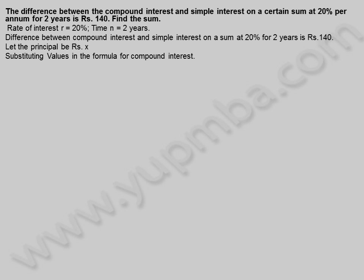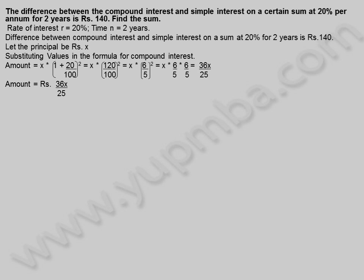Substituting values in the formula for compound interest. Amount is equal to X into (1 + 20/100) whole square, equals X into (120/100) whole square, equals X into (6/5) whole square, equals X into 6/5 into 6/5, which equals 36X by 25. Amount is equal to 36X divided by 25 rupees.